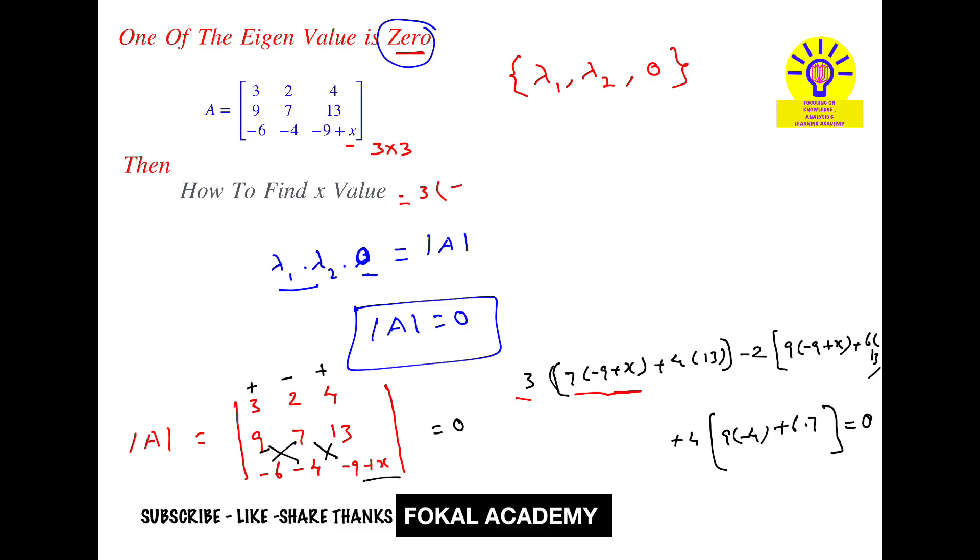So we get minus 63 plus 7x, next plus 52, next plus 4 into minus 36 plus 42. That's equal to 0.